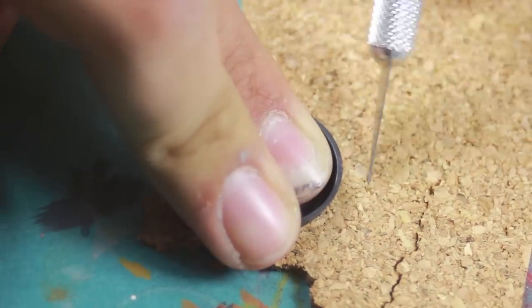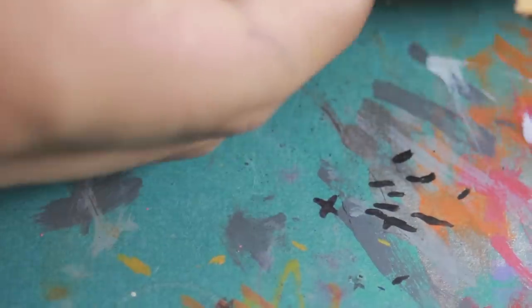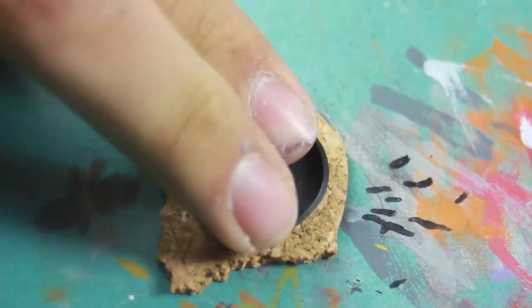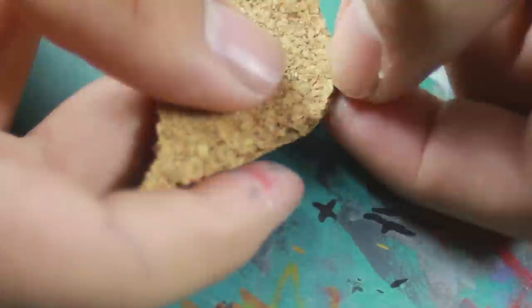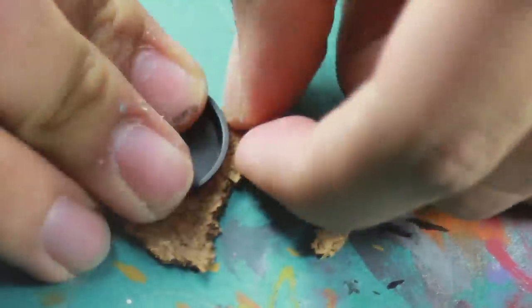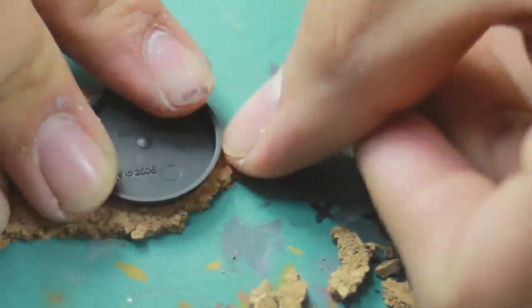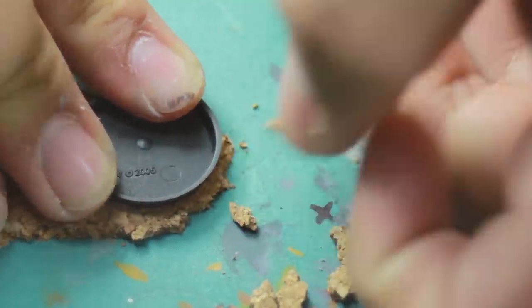So you just want to apply constant pressure and then you can score the cork so that you can tear it easier without wasting so much. Then you can just take your fingers and start tearing the cork. Now you want to make sure that you don't tear the cork and expose some of the base underneath. So you want to make sure that all of the lines, the broken edges are away from the bottom of the base.